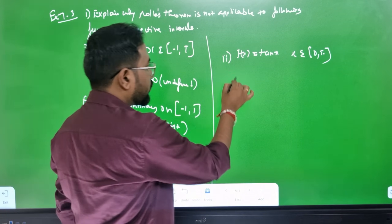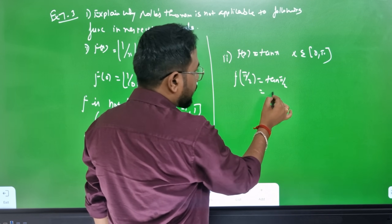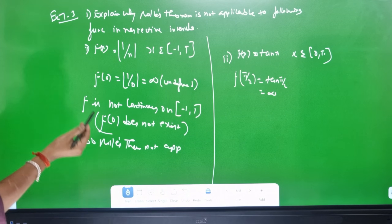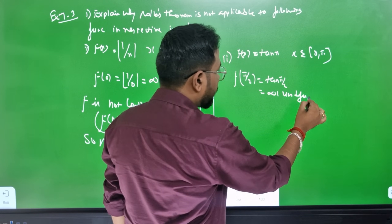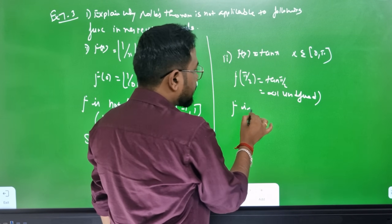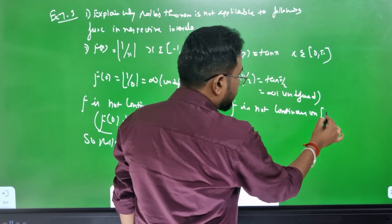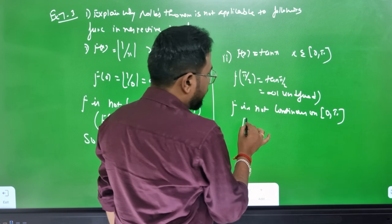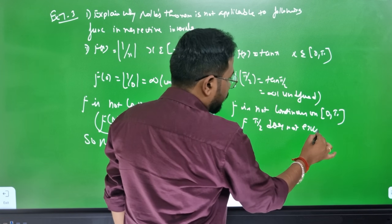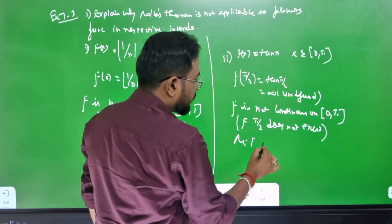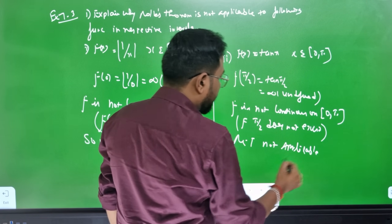Another function on interval [0, 5]: f(5/2) does not exist. F is not continuous on closed bracket [0, 5]. Rolle's theorem is not applicable.